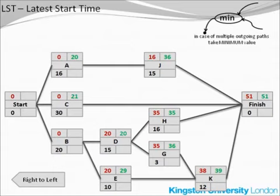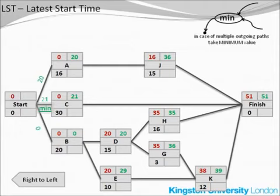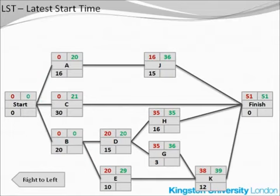There is a similar case with activity B, for which the latest start time may be either 0 — if you look at activity D — or 9 if you look at activity E. The minimum is 0, and so this is the latest start time for activity B. Looking at the start node, the incoming values are 20, 21, and 0, and the minimum is 0. We have now completed the calculation of the latest start time.